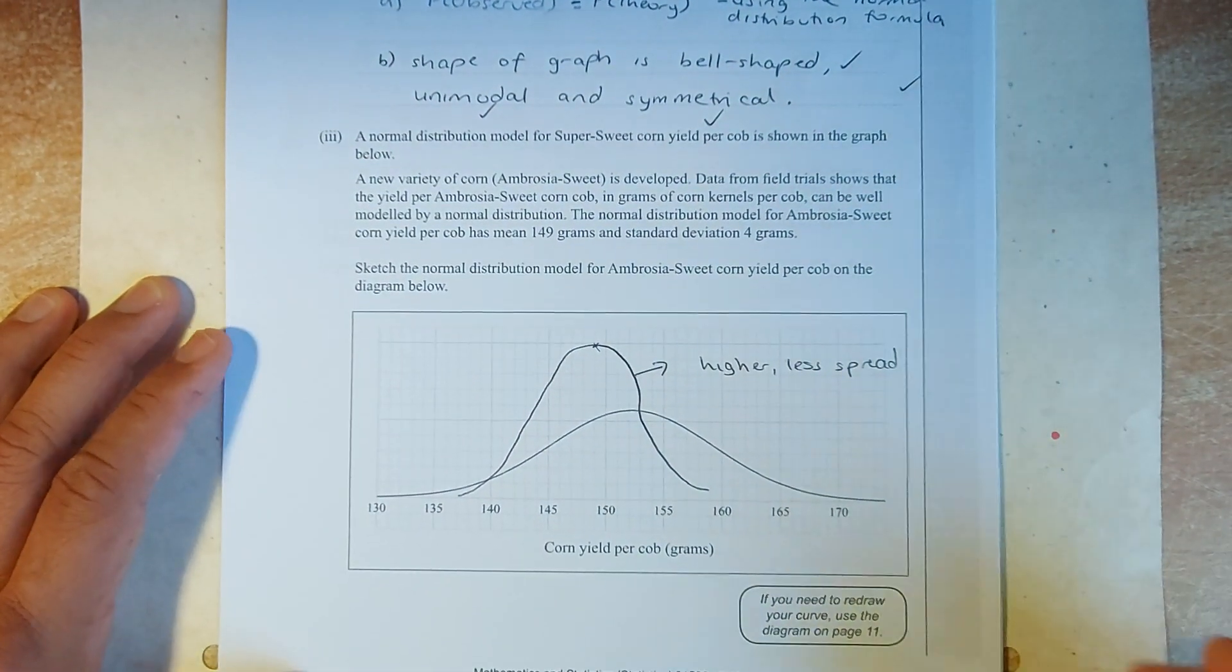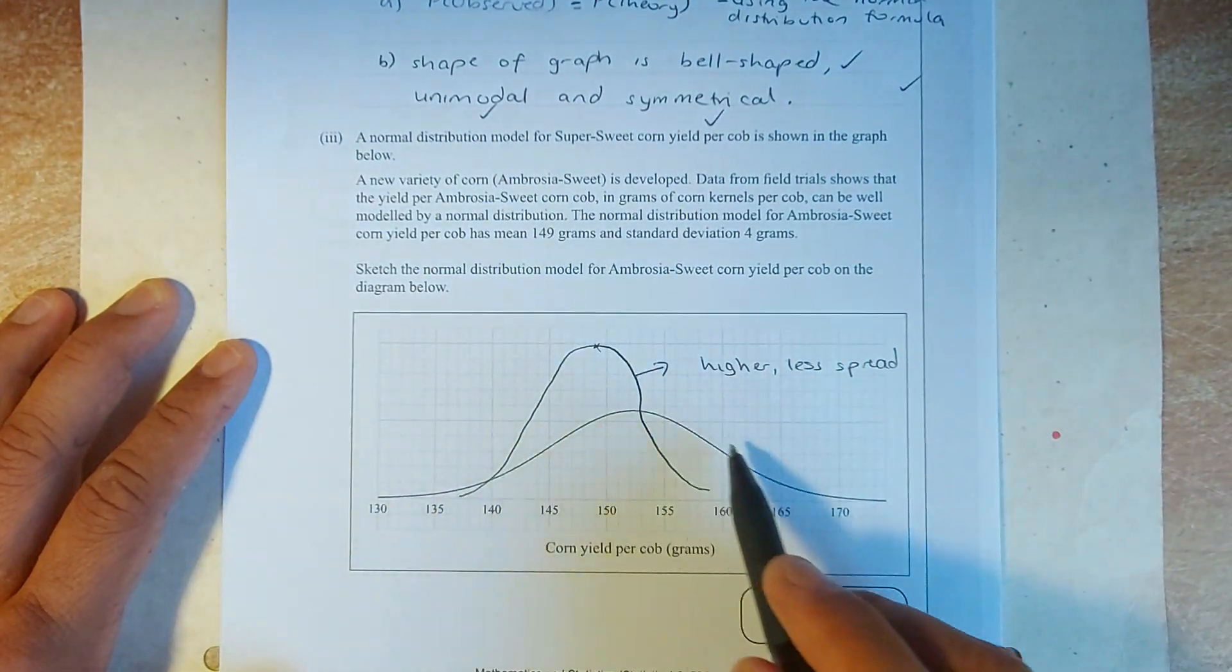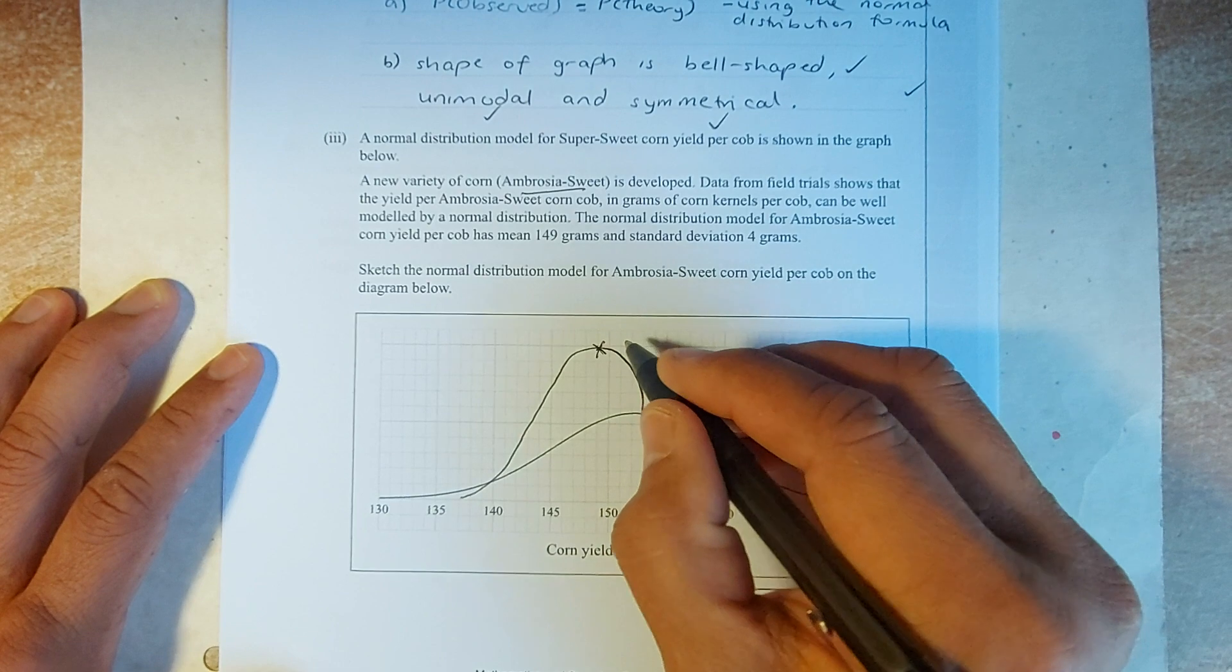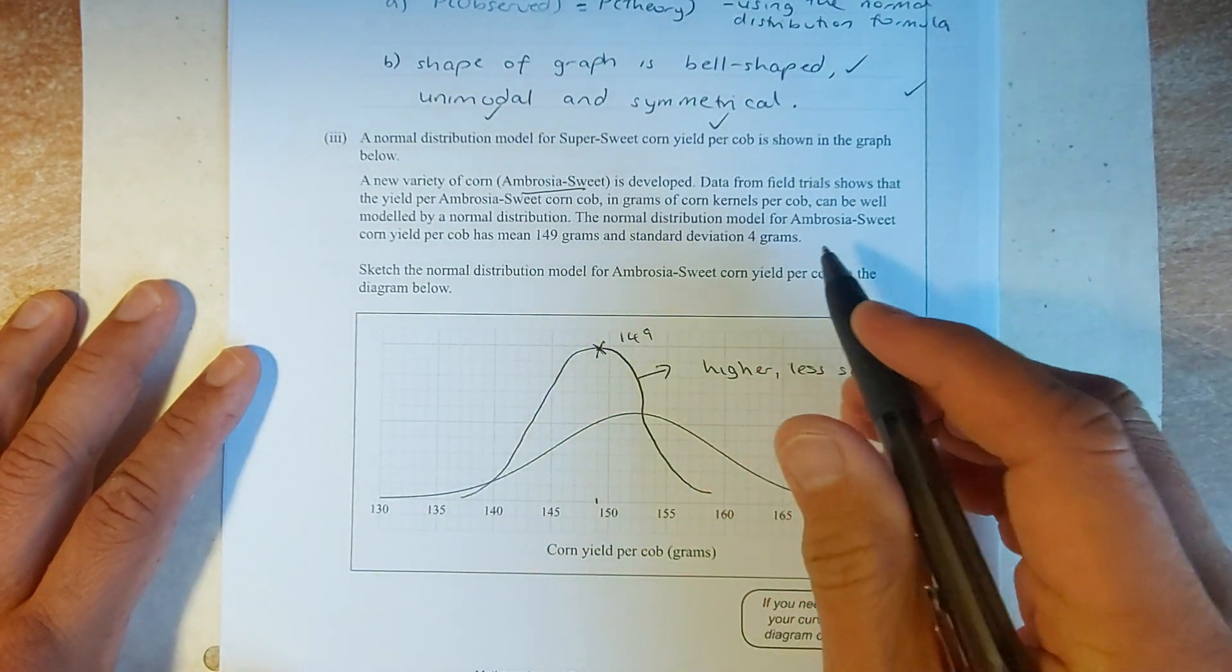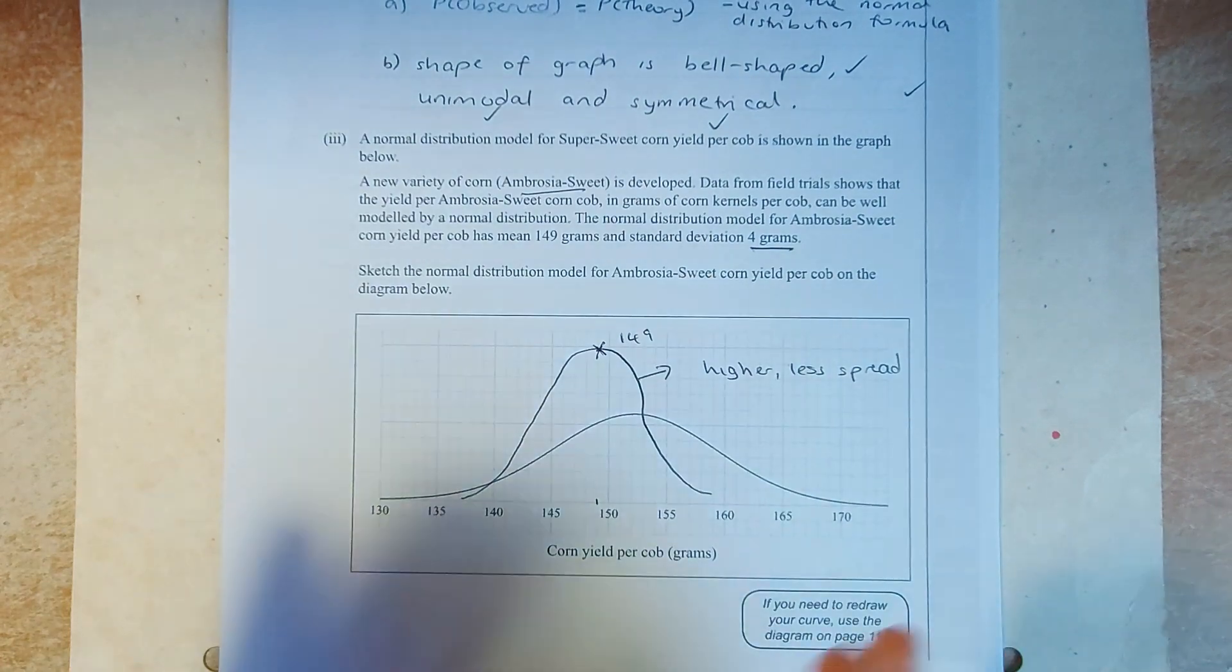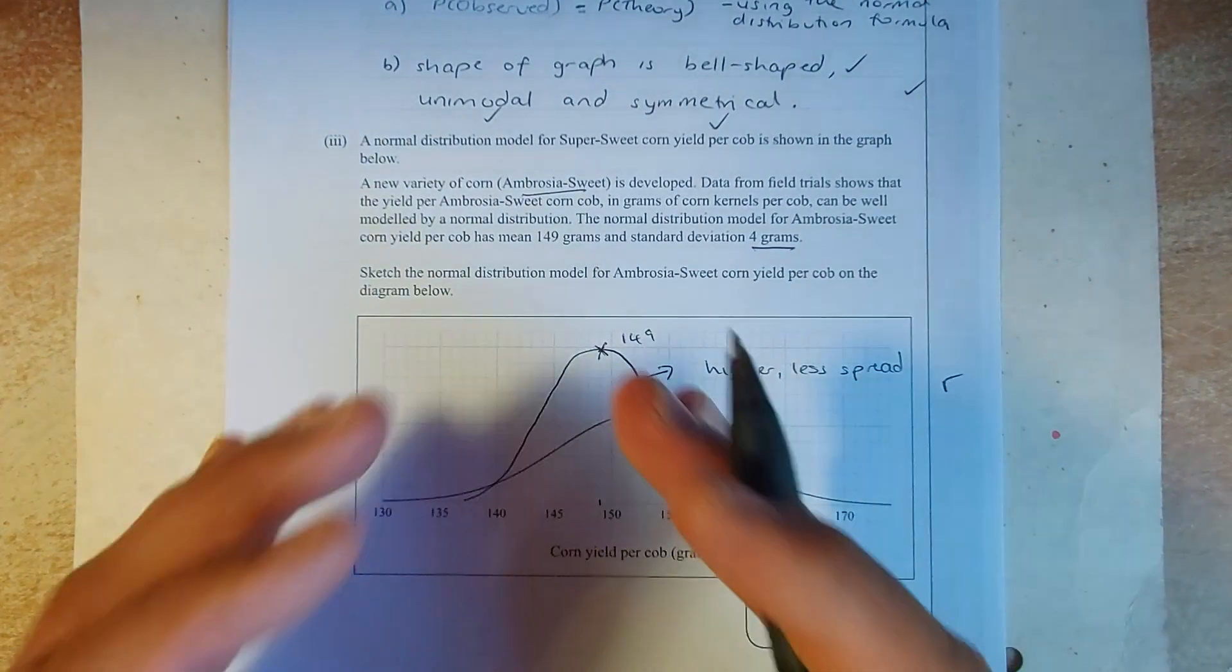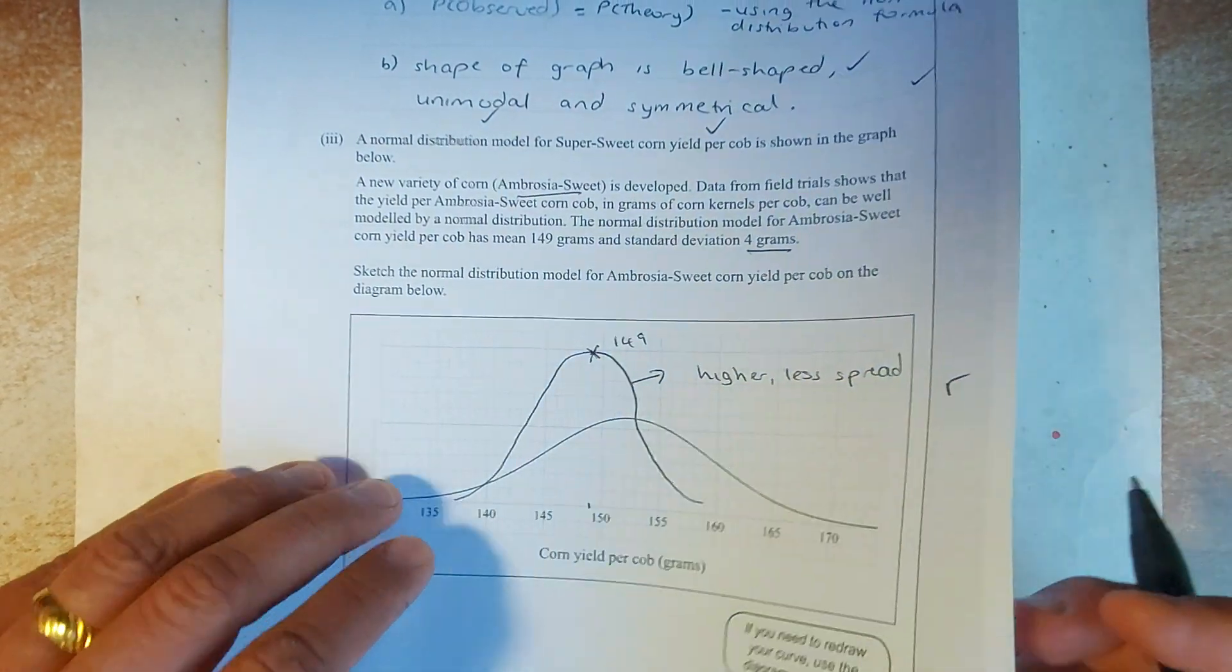Okay, next question. So, they say that the super sweet and embryosal sweet, ask you to draw the graph, they say that the mean is 149. So, there's 149 here. Okay, 149. And the distribution has a standard deviation of 4. Means it is more, less variation. So, it's going to be squeezed and that graph will be drawn and that will give you another merit. Because the distribution is not so spread out, so it's raised up like that. Great, we'll continue now.